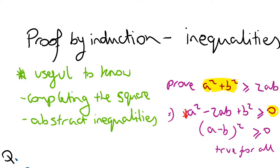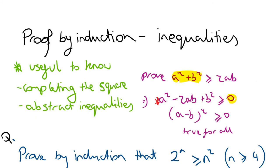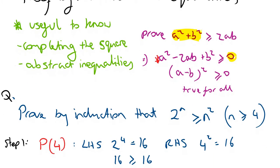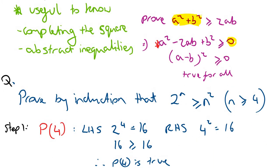The first question is: prove by induction that 2 to the power of n is greater than or equal to n squared, for all values of n greater than or equal to 4, where n is an element of the natural numbers.